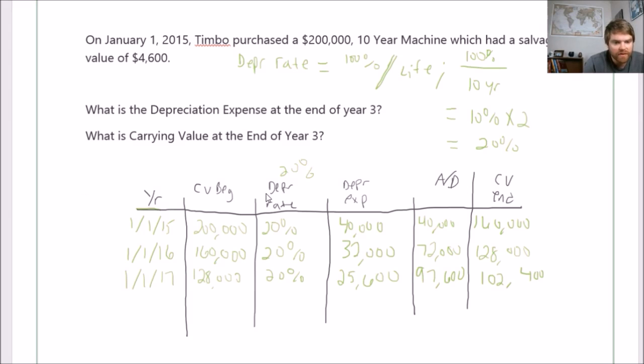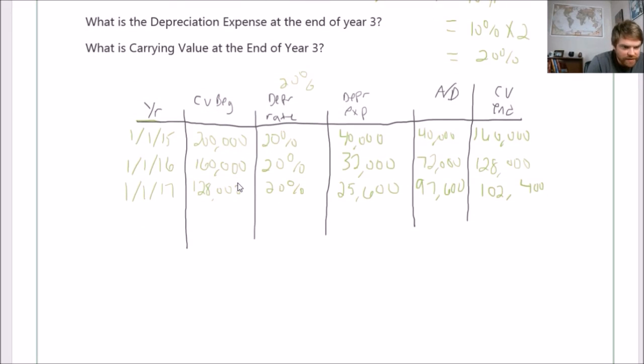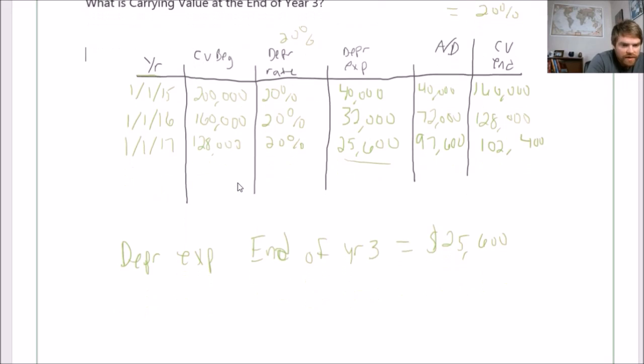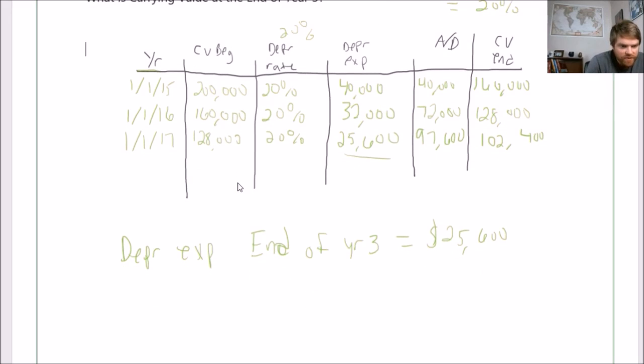And that's it, that's your questions here. So I'll move down and I'll rewrite them. What they're asking here is depreciation expense at end of year three, so that will equal $25,600. And carrying value end of year three equals $102,400.